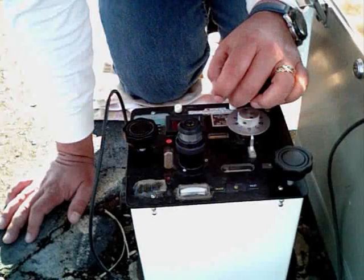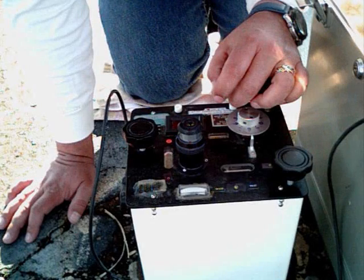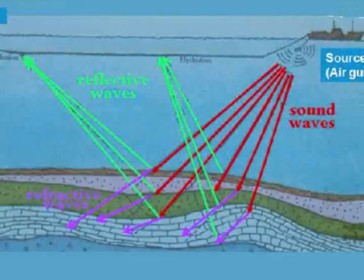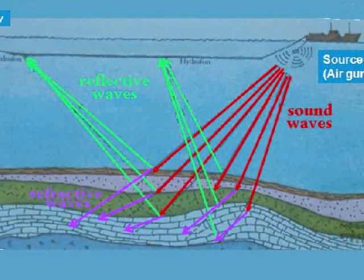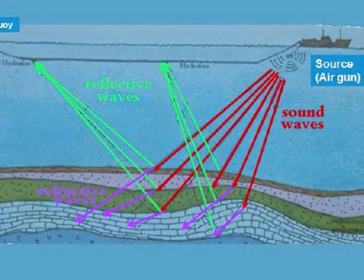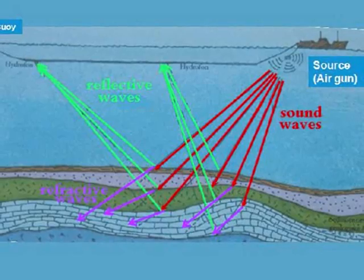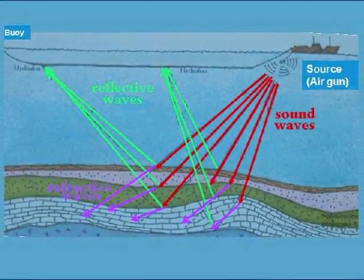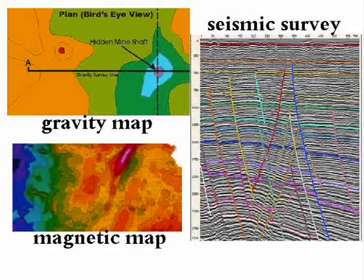The gravity meter measures the Earth's gravity. The second, the magnetic meter measures the Earth's magnetic field. The third, the seismic survey measures sound waves refracting and reflecting off different layers of rock. Now let's look at each in more detail.